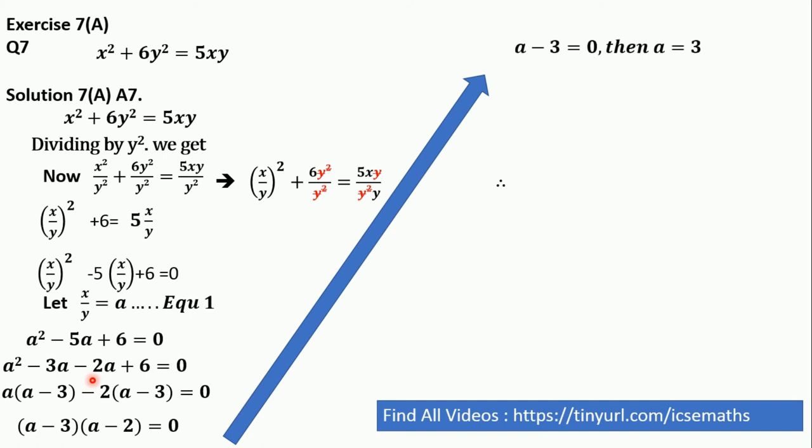Now, if a minus 3 is equal to 0, then a is equal to 3. And if a minus 2 is equal to 0, then the value of a will be 2. Now, if we see equation number 1 where x by y is equal to a,